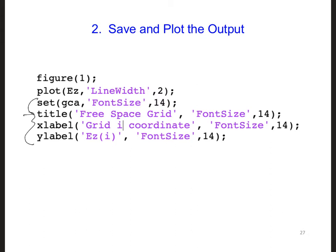Here we're setting the title and I'm changing the font size. The x-label labels the x-axis. We're plotting the EZ array every time step, so the x-axis here is the grid coordinate, and the y-axis we can label as being the EZ component.